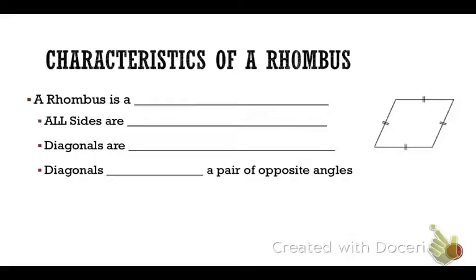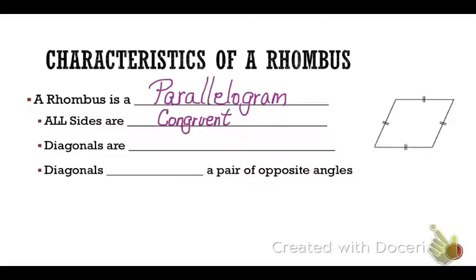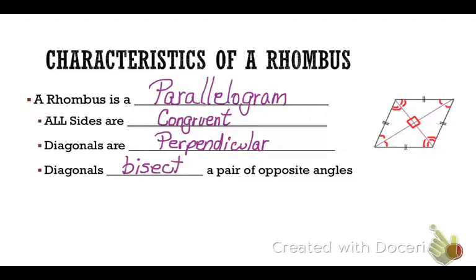Now let's look at the characteristics of a rhombus, which is a type of parallelogram. So it's a four-sided figure and has all the properties of a parallelogram, plus these additional properties: a rhombus has all sides congruent. The diagonals of a rhombus not only bisect each other, they are perpendicular. And the diagonals of a rhombus bisect a pair of opposite angles. Write all of these down and memorize them.